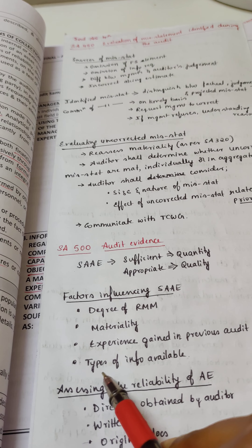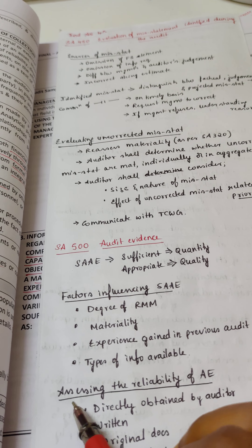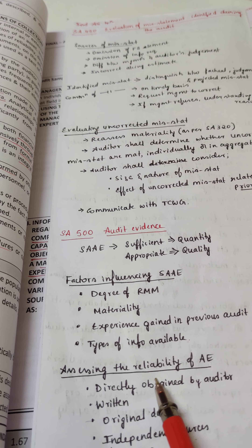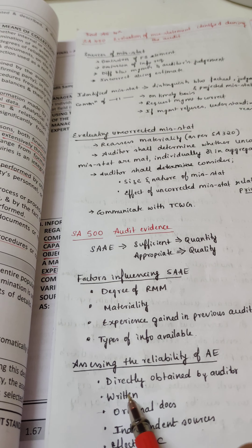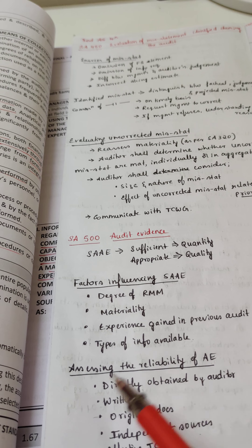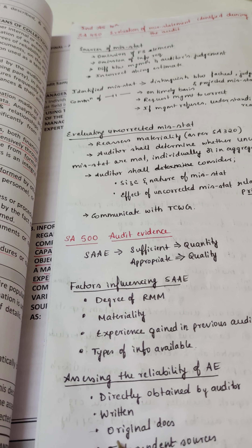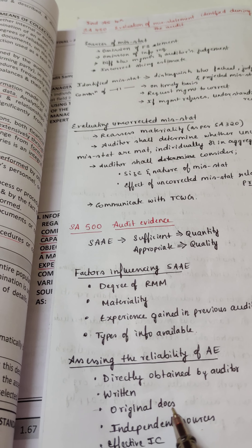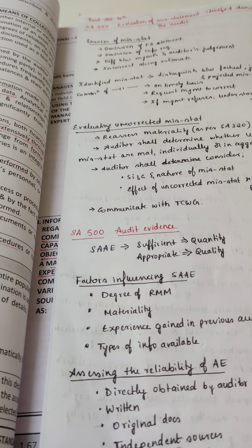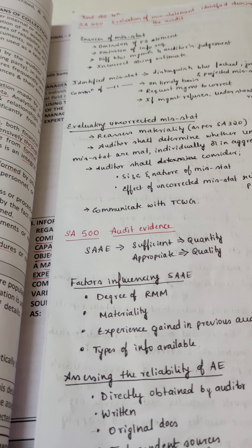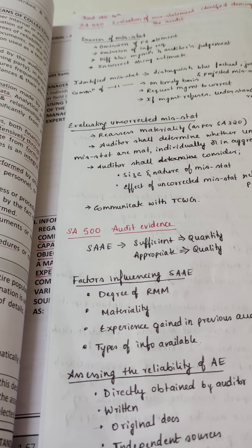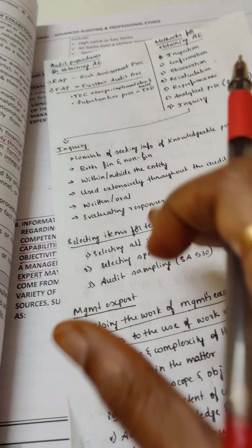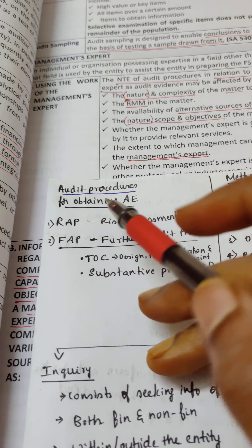Assessing the reliability of audit evidence: it should be obtained directly by the auditor, it should be in written form, we should take original documents and not photocopies, it should come from independent sources, and there should be effective internal control.